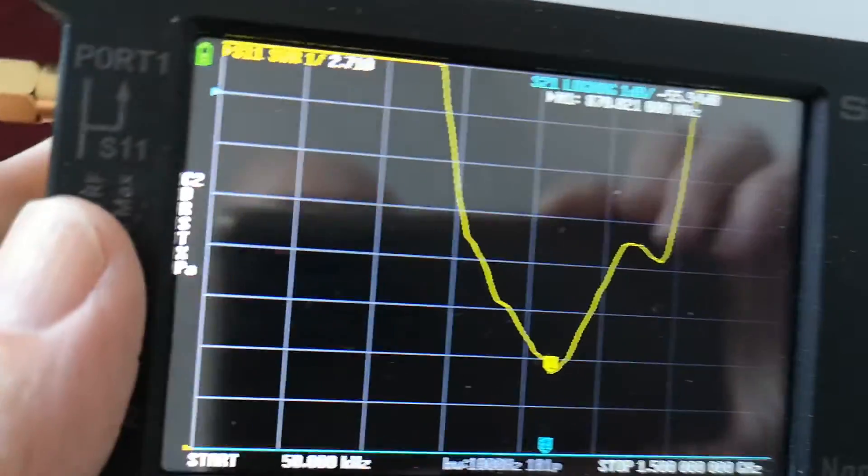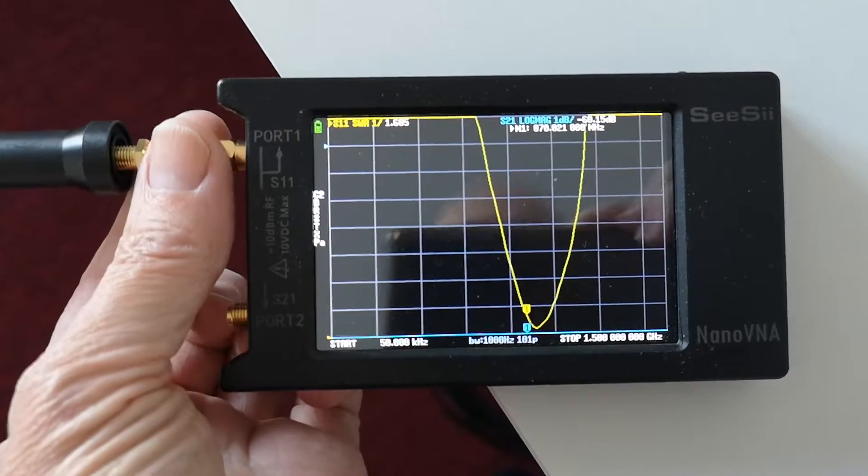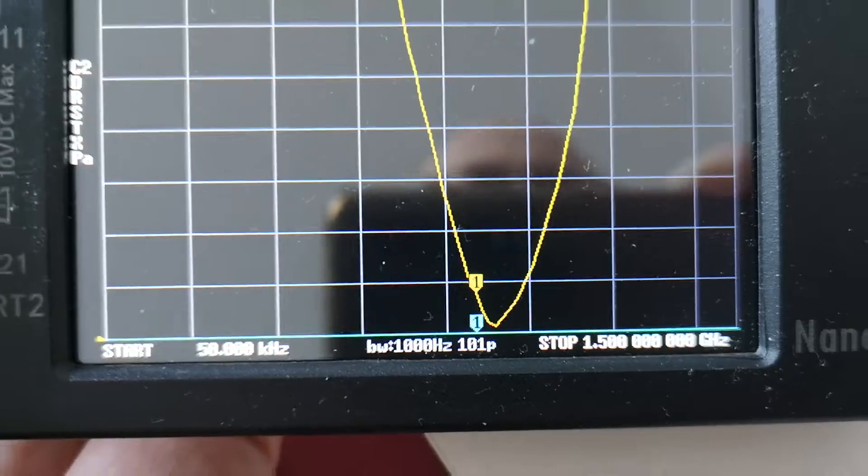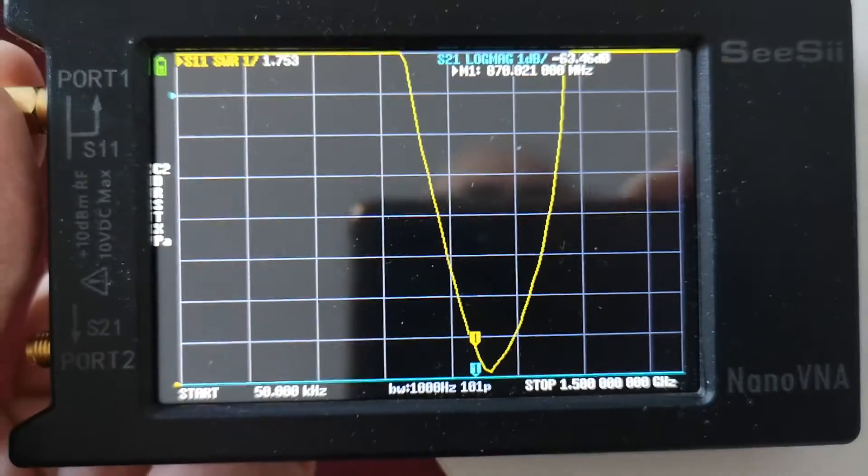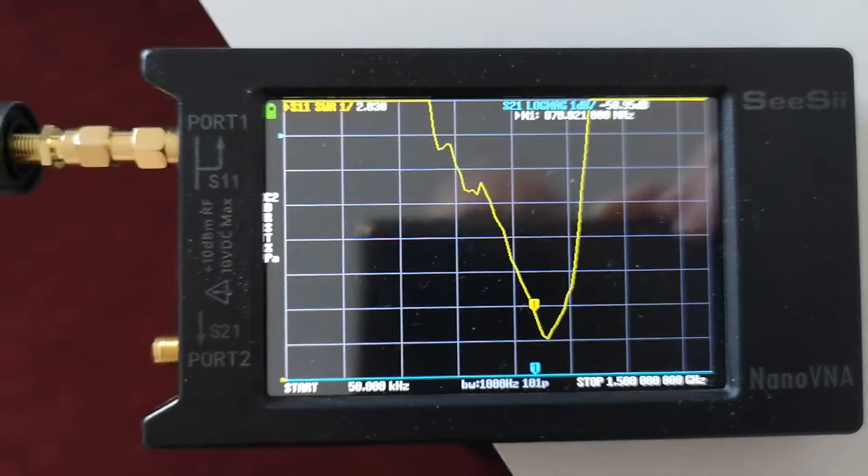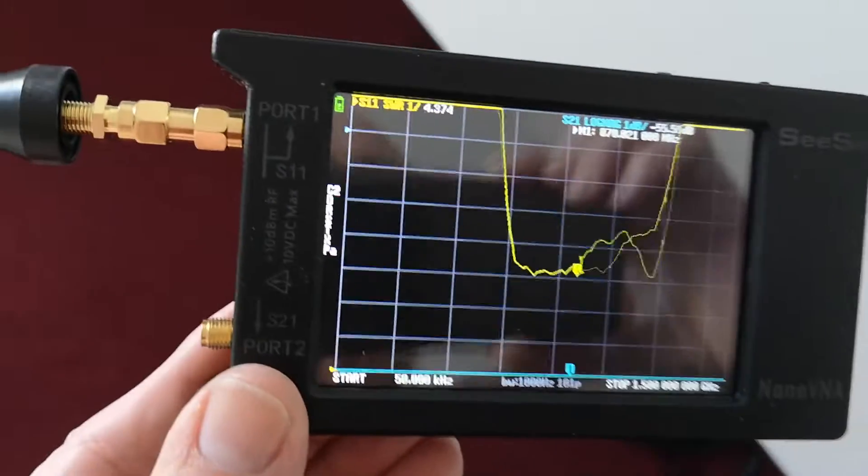So I thought about it and I thought well antennas sometimes need ground planes so if I just hold onto this what happens. Oh you can see now the SWR has gone right down to 1 to 1 at just above 870 megahertz which is what I would hope. The only problem is when you let go of it, it is a bit variable performance.